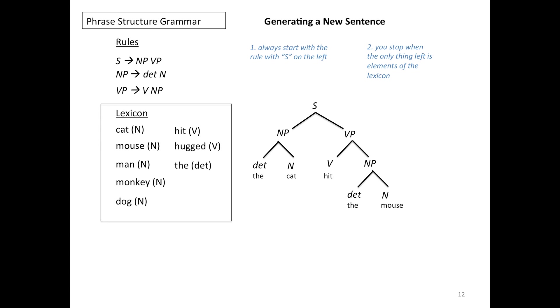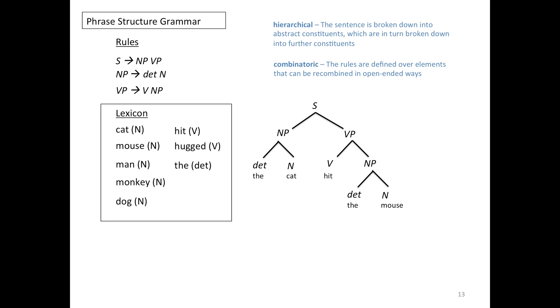Let me summarize some points about how you use phrase structure grammars to generate a new sentence. Always start with the rule with an S on the left. That's your starting point. You keep on decomposing constituents further and you stop only when the only thing left is elements of the lexicon which essentially are terminal nodes and can't be decomposed any further.